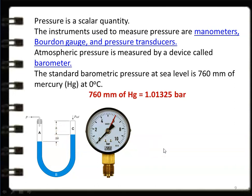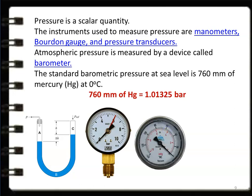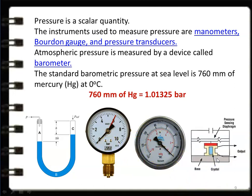The Bourdon pressure gauge has a dial that indicates pressure. Inside, a Bourdon tube and mechanical system convert the pressure signal into a reading. A vacuum gauge is the same type of Bourdon gauge but for pressures below atmospheric, reading in bar or millimeters of mercury. The pressure transducer applies pressure to a diaphragm that deflects; the deflection is sensed by a crystal, which produces an electrical output that is calibrated into a pressure reading.